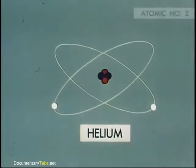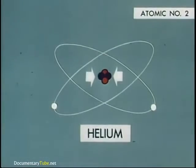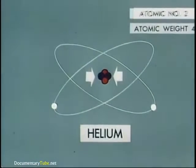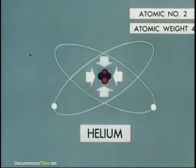A helium atom has two electrons and a nucleus composed of two protons plus two neutrons. So helium has the atomic number two, same as the number of protons it possesses, and an atomic weight of four — its protons plus neutrons.